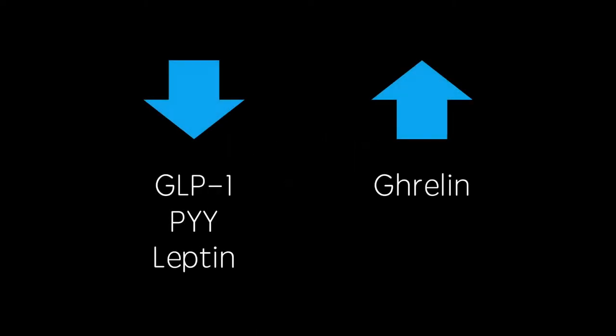In this video, I'm going to explain the function of the hormone leptin. The main anorexogenic hormones, meaning those which decrease appetite, include GLP-1, PYY and leptin, while the main orexogenic hormone, which increases appetite, is ghrelin.